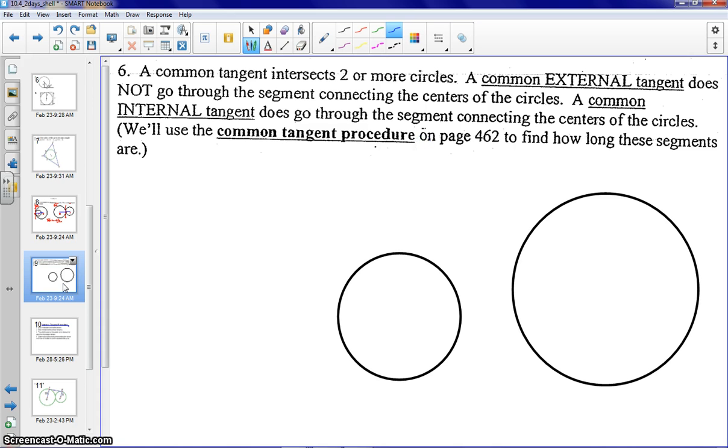Now let's discuss common tangent. A common tangent intersects two or more circles, and again, it could be external or it could be internal. The main difference here is a common internal tangent does go through the line of the centers, where an external tangent does not go through the line of centers. So again, let's draw an example of that.